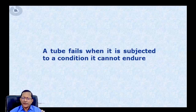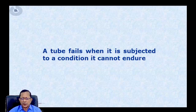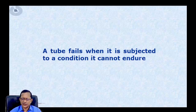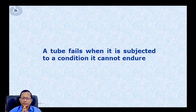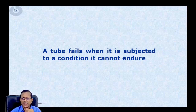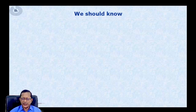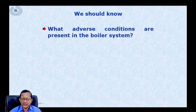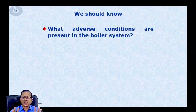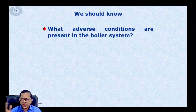Simply speaking, a boiler tube fails because it is working under a condition it cannot endure — its strength is not enough for the condition under which it is working. That condition was created by us: by a designer, during erection, during operation, or even during maintenance. To prevent tube failure, we should know what adverse conditions the boiler system works under and which adverse condition leads to which kind of damage mechanism.